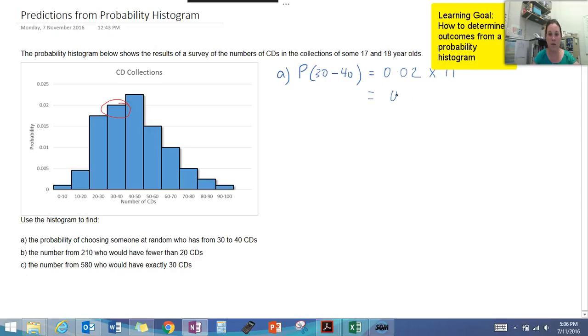For part B, the number from 210 who would have fewer than 20 CDs. Again, we need to work out the probability of having less than 20 CDs, and that's going to be equal to looking at these two sections here.